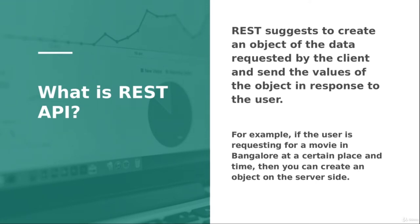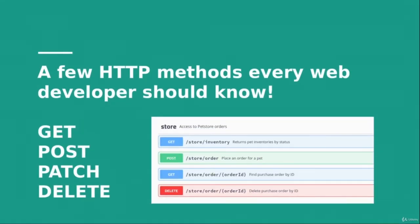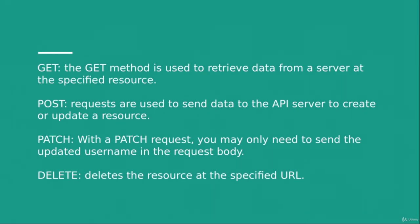In REST APIs we use GET, POST, PATCH, and DELETE requests — four HTTP methods every developer should know. A GET request means you want to retrieve data from a server at a specified resource. Any data you send must be appended to the URL, and you get back data corresponding to that endpoint.